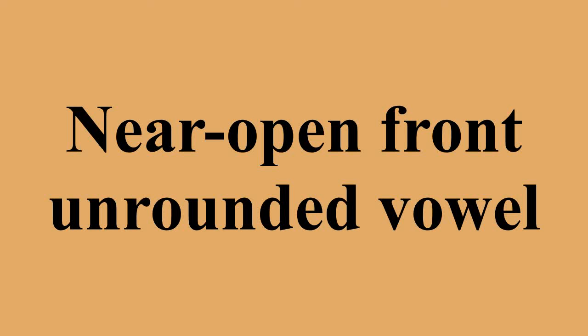The near-open front unrounded vowel, or near-low front unrounded vowel, is a type of vowel sound used in some spoken languages. Acoustically, it is simply an open or low front unrounded vowel. The symbol in the International Phonetic Alphabet that represents the sound is a lower case of the A ligature. Both the symbol and the sound are commonly referred to as 'ash'. The rounded counterpart of the near-open front rounded vowel has been reported to occur allophonically in Danish.